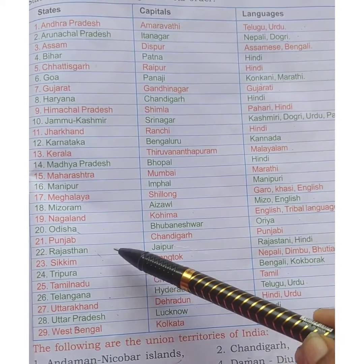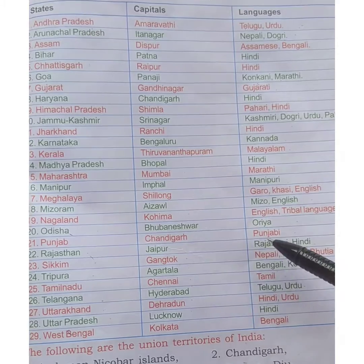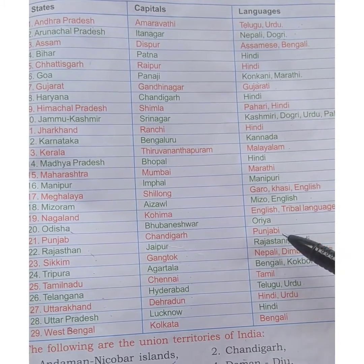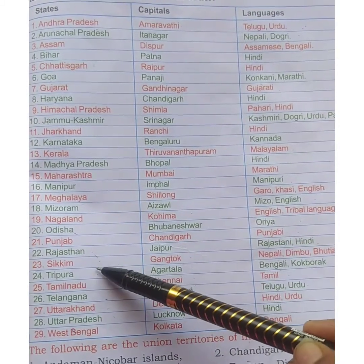Next is Rajasthan. The capital is Jaipur. They speak Rajasthani and Hindi.